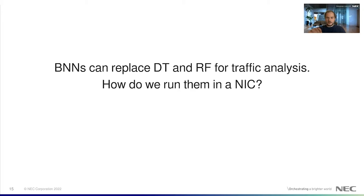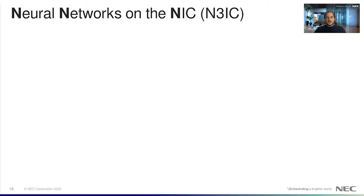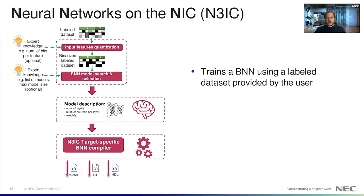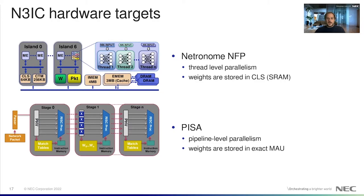Okay, so BNNs can replace decision trees and random forests for traffic analysis. But how do we run them in a NIC? We then developed NTRIC, neural network on the NIC, a system that compiles binary neural network models into implementations that can be directly integrated in the data plane of commodity SmartNICs. Users provide a labeled dataset, and NTRIC uses it to generate a binary neural network model, which is then compiled to a data plane program for a target NIC. NTRIC provides two compiler backends targeting two different hardware platforms: system on a chip-based Netronome SmartNICs and PISA-based architectures. In the case of Netronome NFP, we use the Micro-C programming language and exploit thread-level parallelism. Also, BNN weights are stored in the CLS SRAM levels.